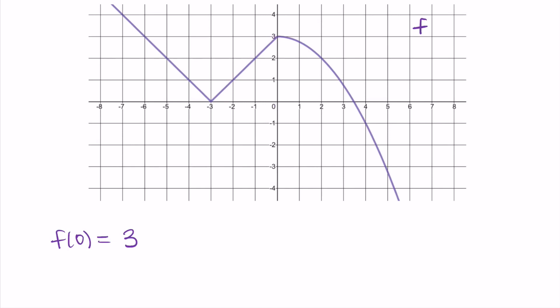Let's try another one: f of negative four equals what? We follow the same process. Negative four is my x, so I look at x equals negative four and find what y goes with it. I see that y equals one, so there's a point at (−4, 1). So one is my answer — one is the output that goes with negative four as the input.